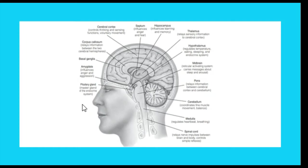We also have the limbic system, which is important for emotion, motivation, memory, and learning. It helps us adapt our behavior flexibly in response to a changing environment. Inside the limbic system, we have the septum, which involves anger and fear. We also have the amygdala, which plays an important role in emotion, especially anger and aggression. Damage to or removal of the amygdala can result in maladaptive lack of fear, as seen in autism.